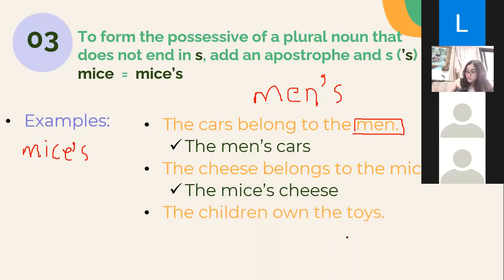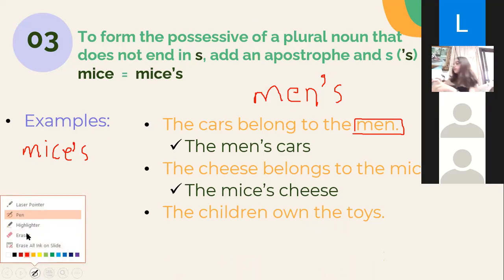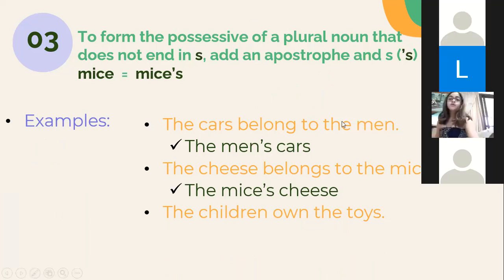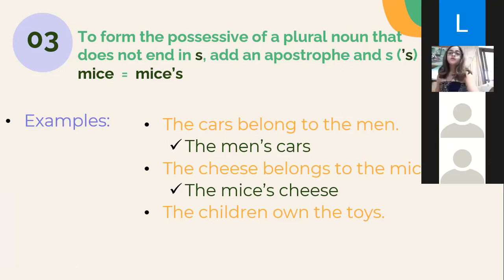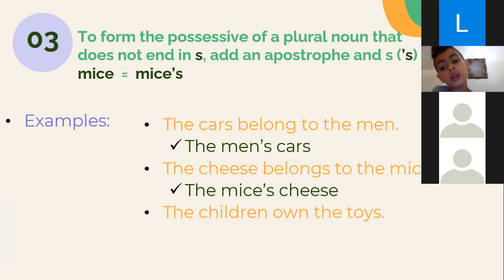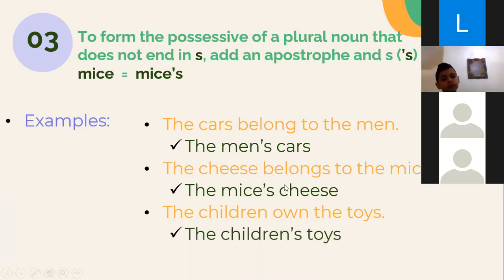Third example: the children own the toys, so the toys belong to the children. 'Children' is an irregular plural — it doesn't have S at the end. So what does the rule say? We add apostrophe then S: 'the children's toys.' To summarize: singular noun → apostrophe then S; irregular plural noun → apostrophe then S; regular plural noun that already has S → just add apostrophe.